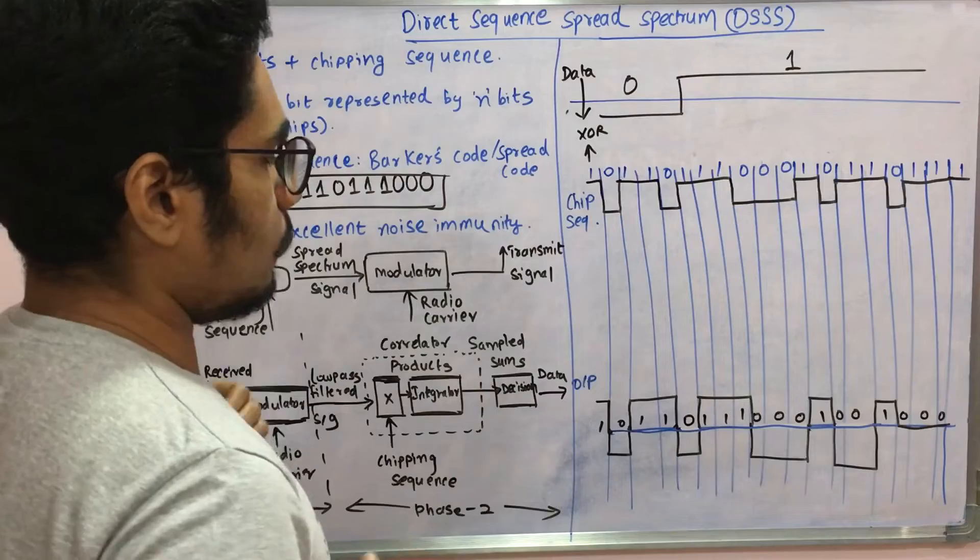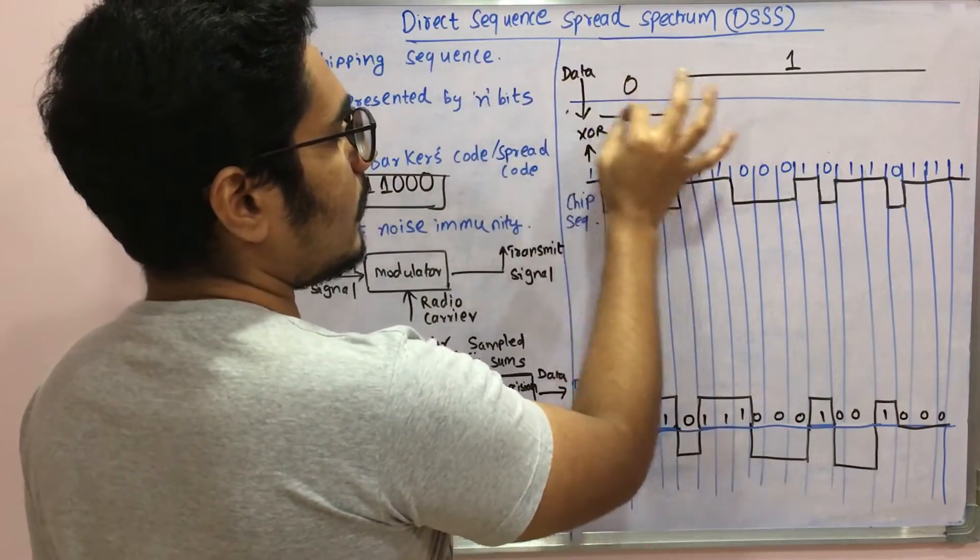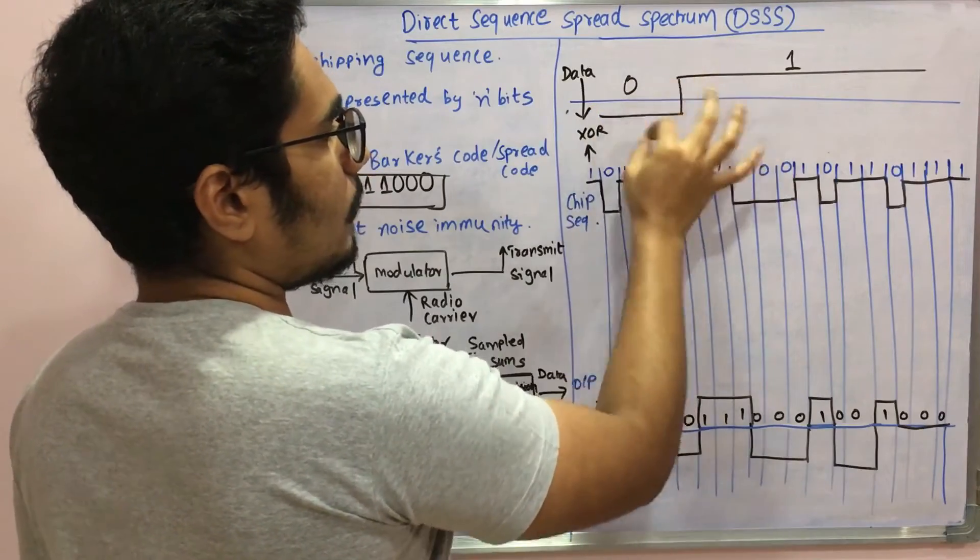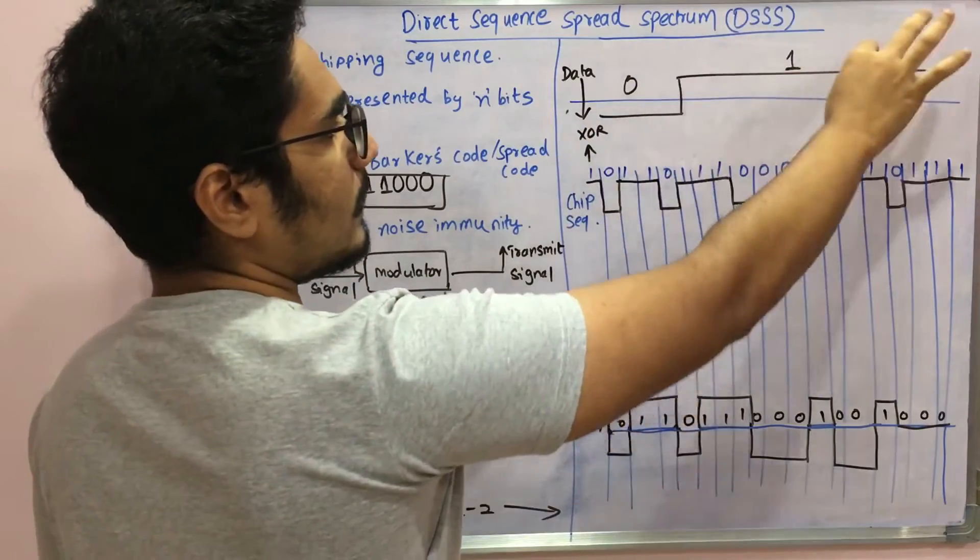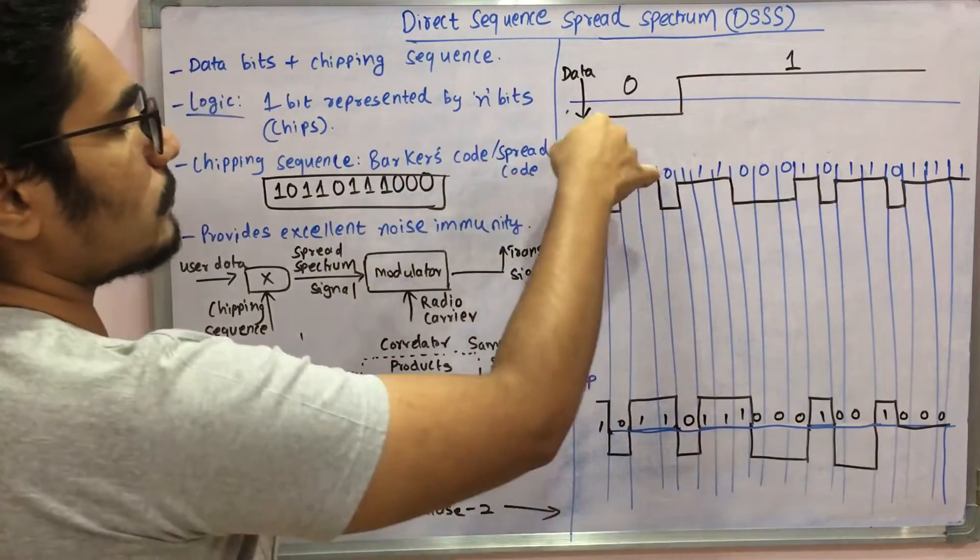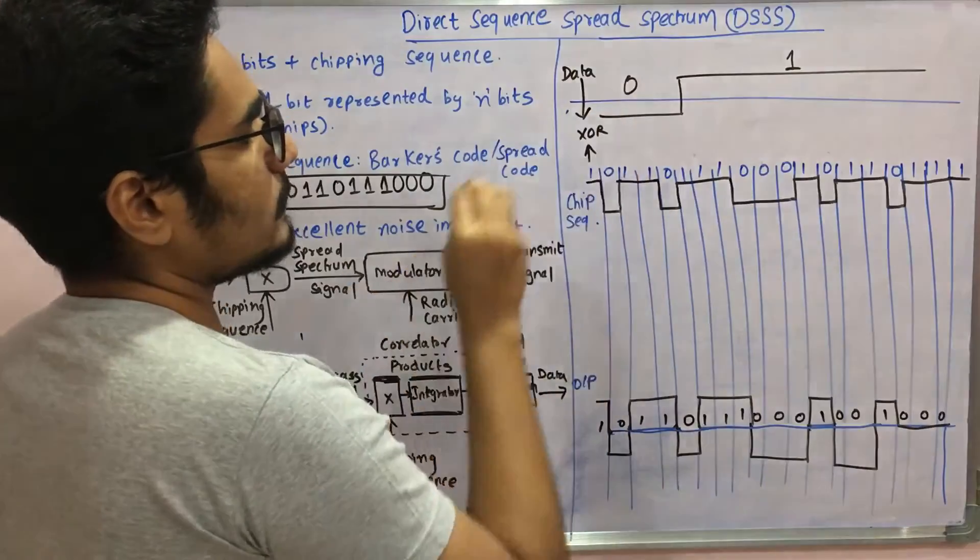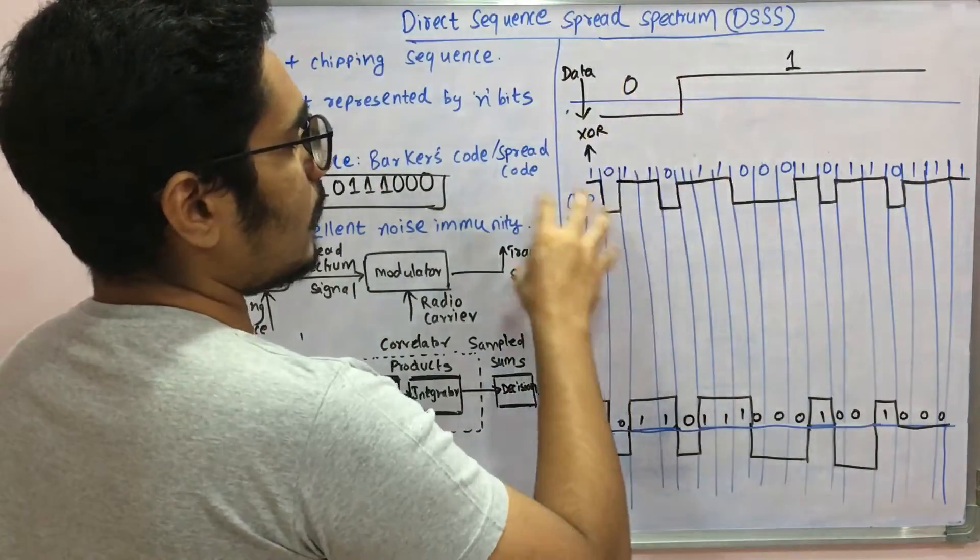For example, let's consider a signal. That signal, let's consider the lower portion as zero and the increased as one. You have this data in this format, and you XOR it with the chipping sequence. That data with this chipping sequence is XORed.